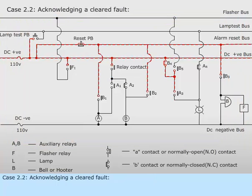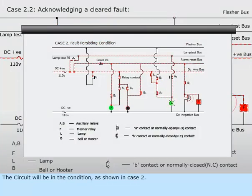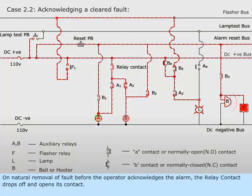Case 2.2. Acknowledging a cleared fault. The circuit will be in the condition as shown in Case 2. On natural removal of fault before the operator acknowledges the alarm, the relay contact drops off and opens its contact.